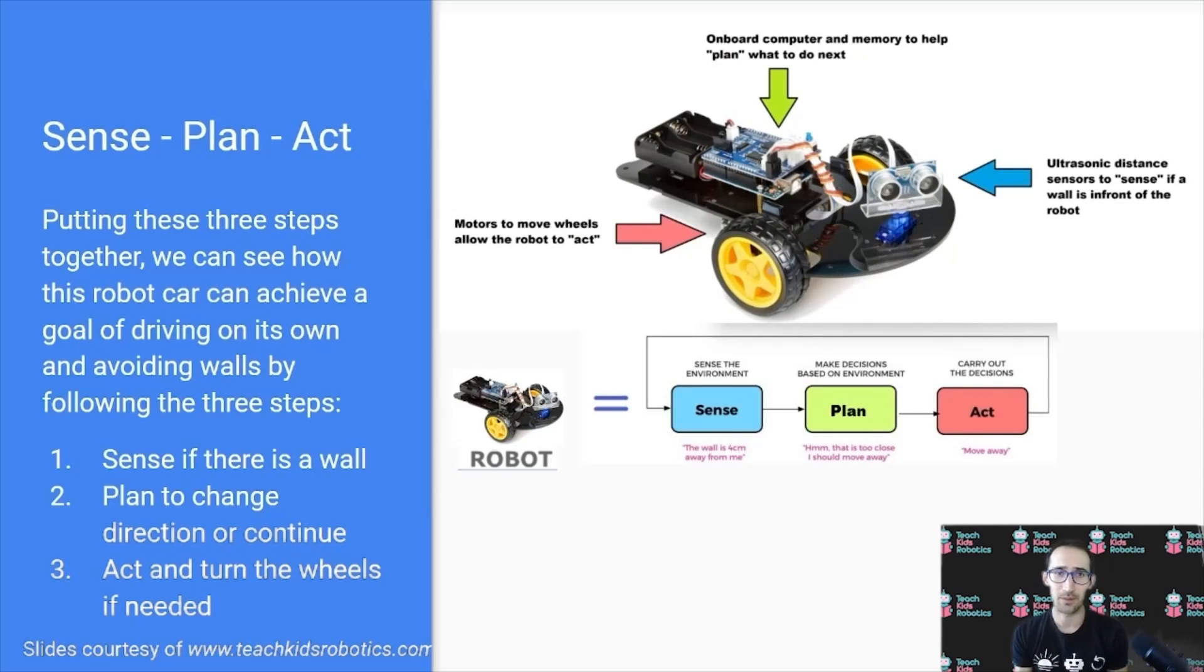Putting all these three objects together, we can identify why we consider this electronic car to be a robot. It can have a goal of not hitting a wall and driving around. It can sense if there is a wall using its ultrasonic sensor.